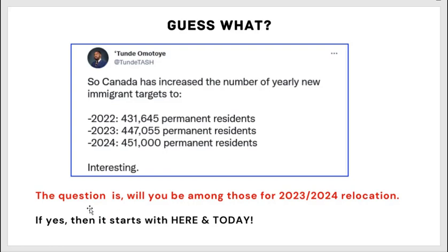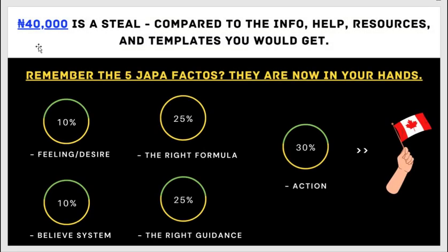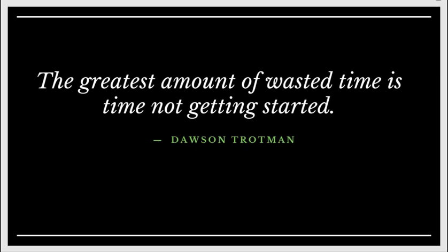Will you be among those for the 2023 and 2024 relocation? If yes, it starts today. I know some of you might say 40,000 is too much, but consider the information, help, resources, and templates you will get. Remember: the right formula, the right guidance, and the right action — this is what will take you to Canada. Anything outside of this, your application will be denied. Get it right once and for all.